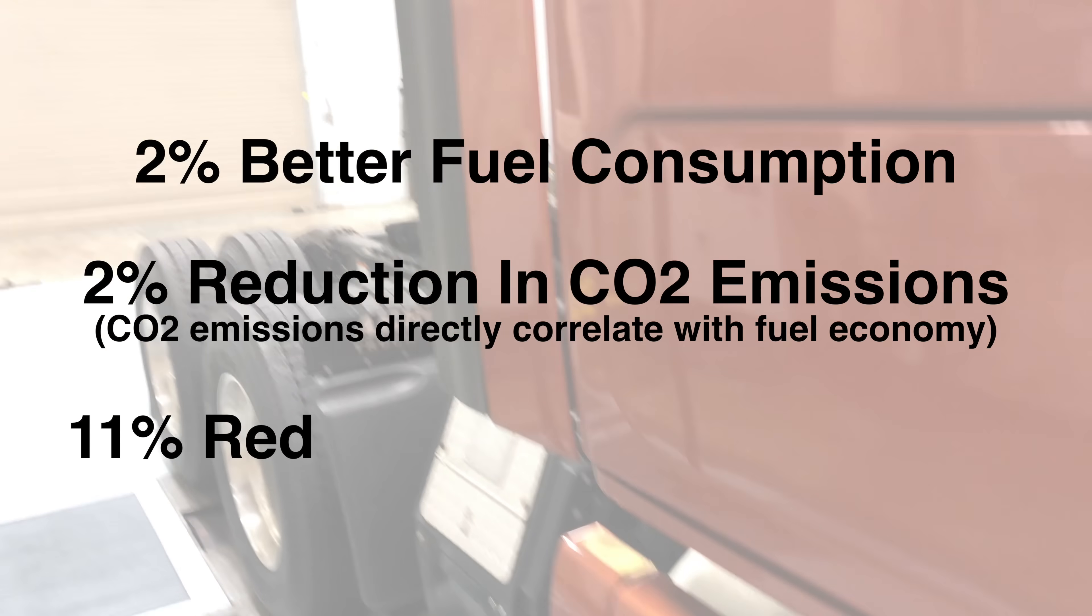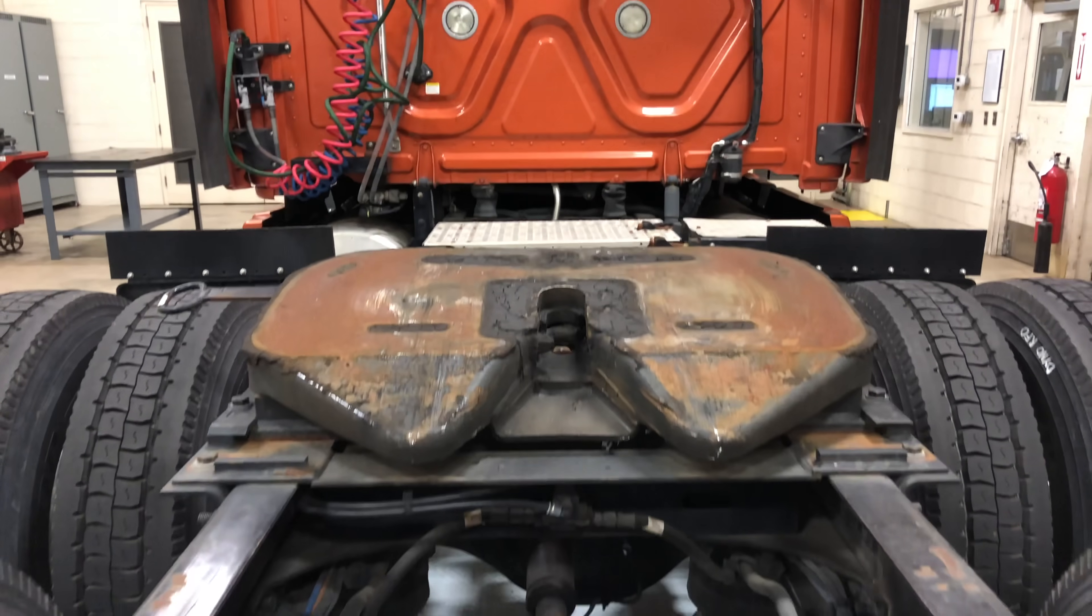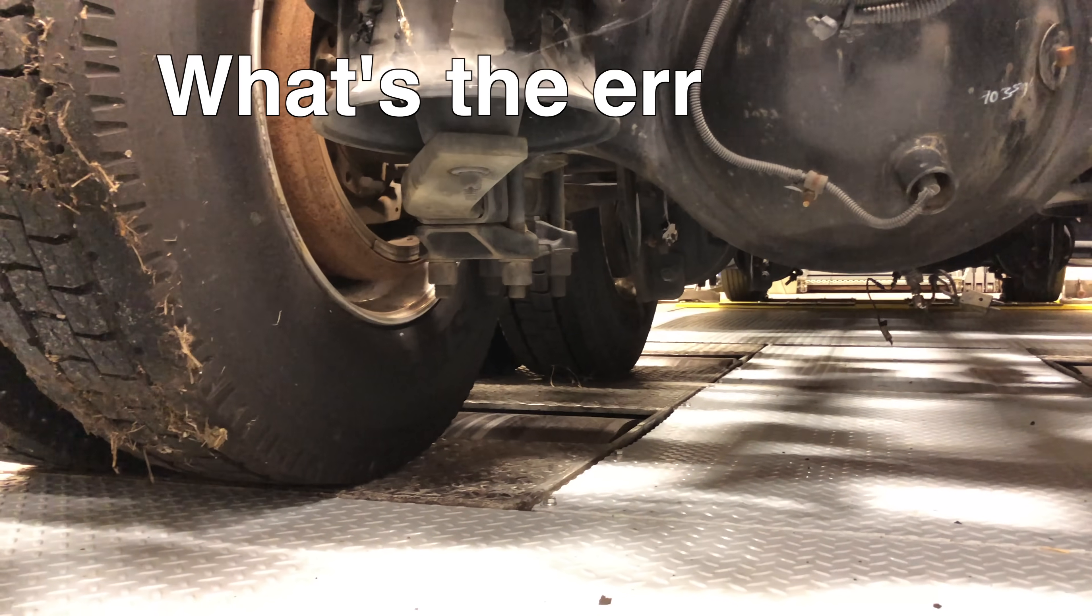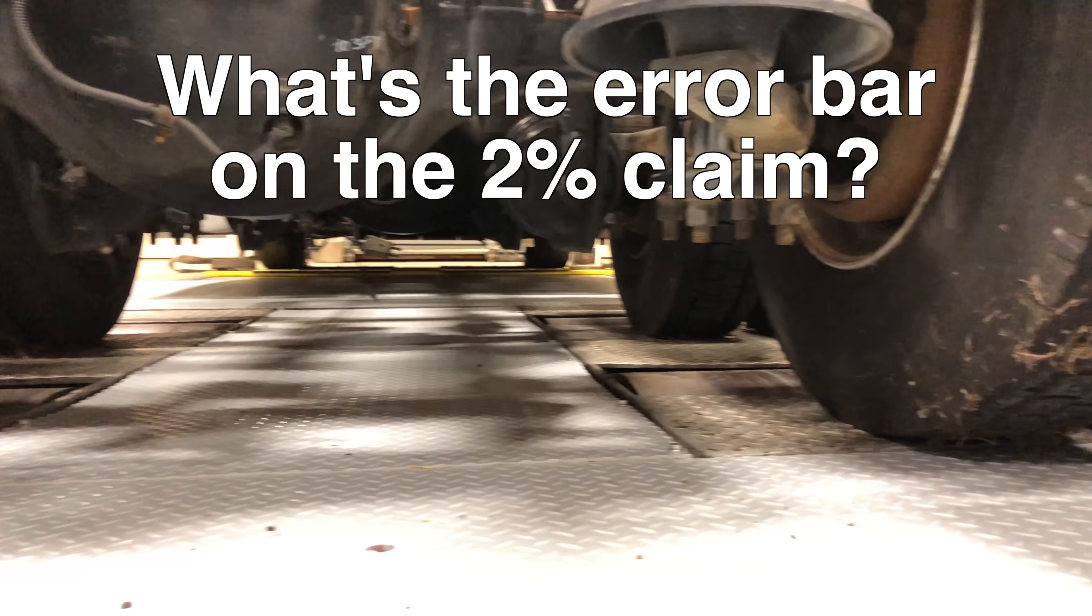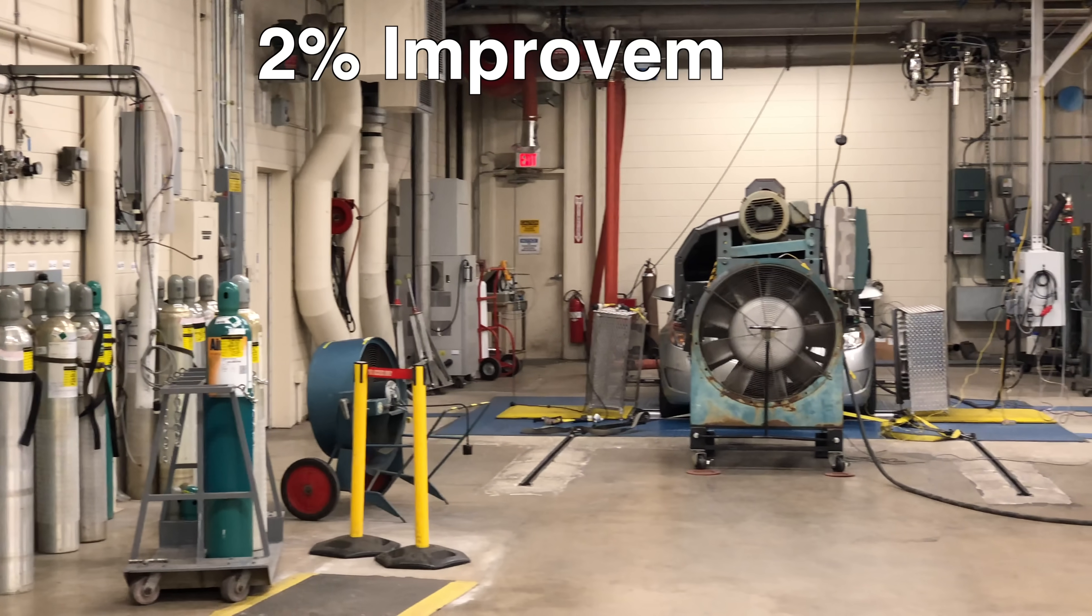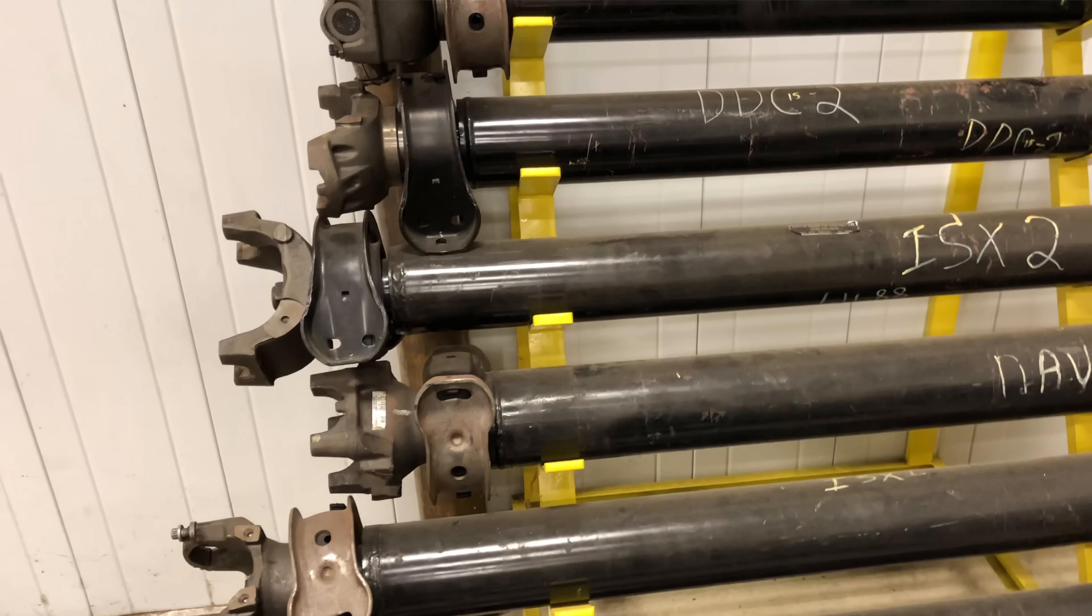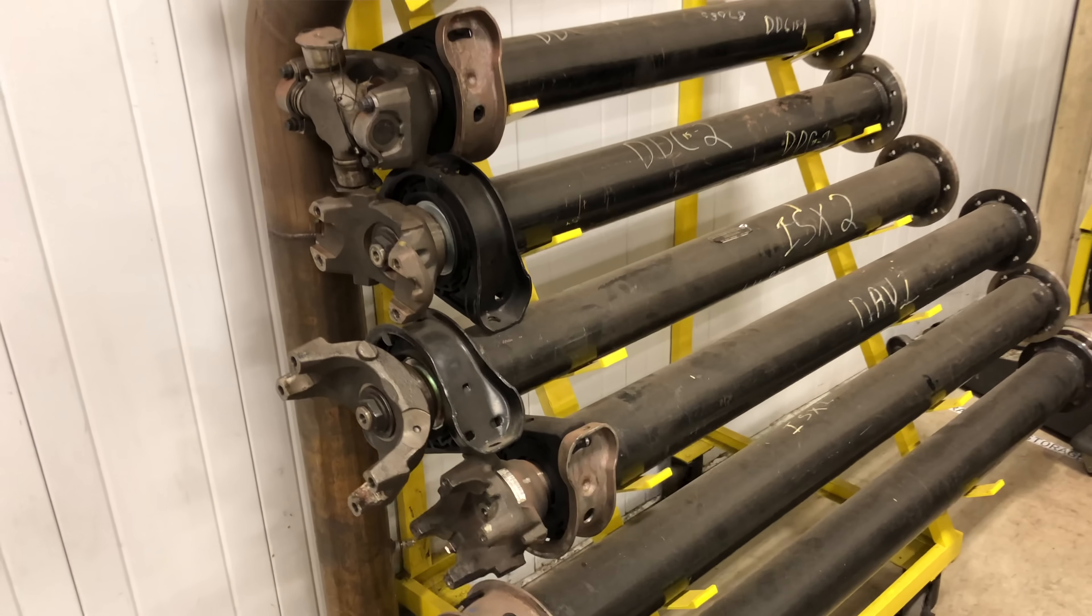This is where the facility noticed that fuel consumption was improved by 2% on average, with CO2 reduced by 2% and NOx emissions reduced by 11%. Now you might wonder, wait a minute, we're measuring a 2% difference on a chassis dynamometer? That's impossible, what's the error bar? Well, I thought the exact same thing, and this test facility actually had to incorporate some special tools to make this all possible. At the end of the day, they were able to get a 2% improvement with standard deviation of just 0.4%, meaning that statistically, the 2% claim is easy to trust.